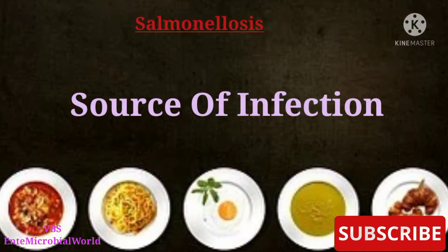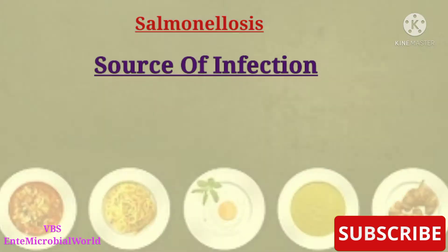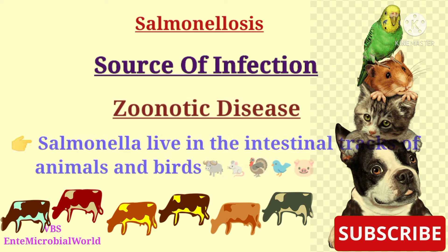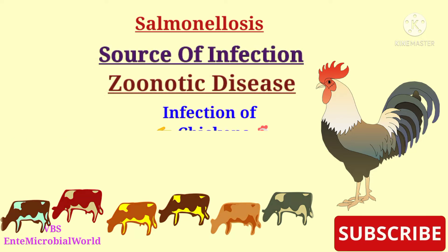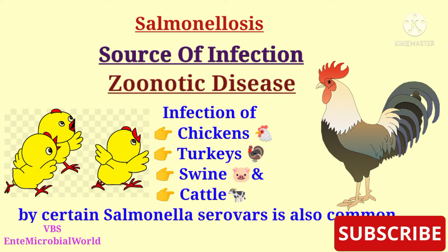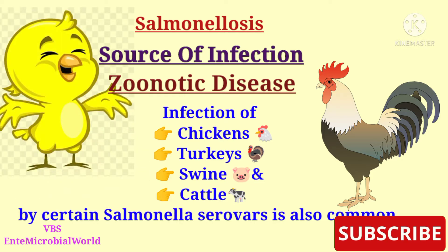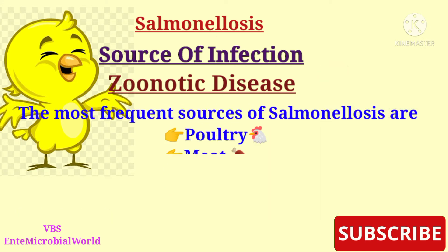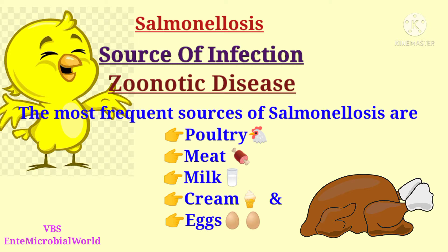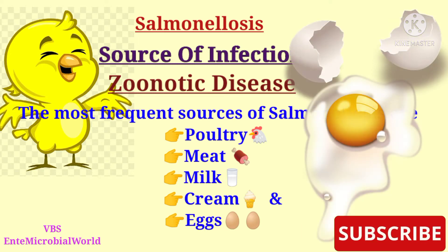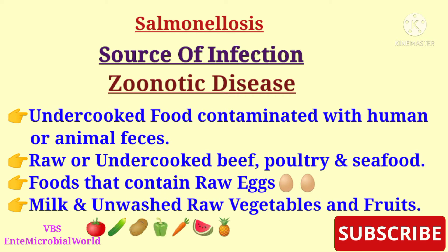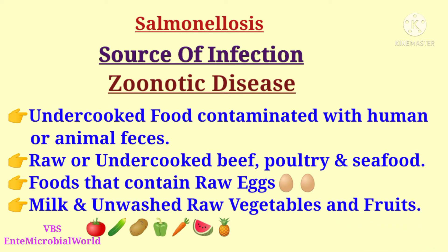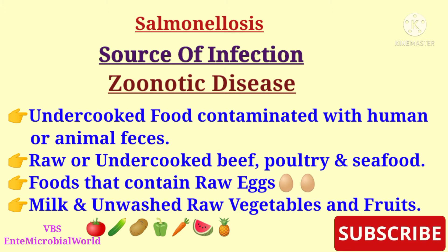Salmonellosis is generally a zoonotic disease. Salmonella live in the intestinal tracts of animals and birds. Infection of chickens, turkeys, swine, and cattle by certain salmonella serovars is also common. The most frequent sources of salmonellosis are poultry, meat, milk, cream, and eggs.